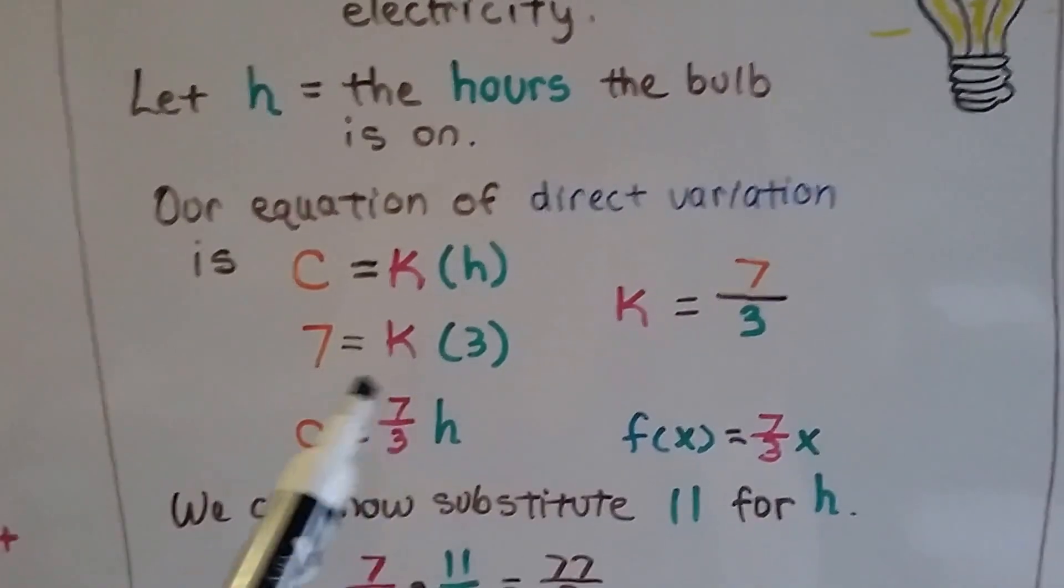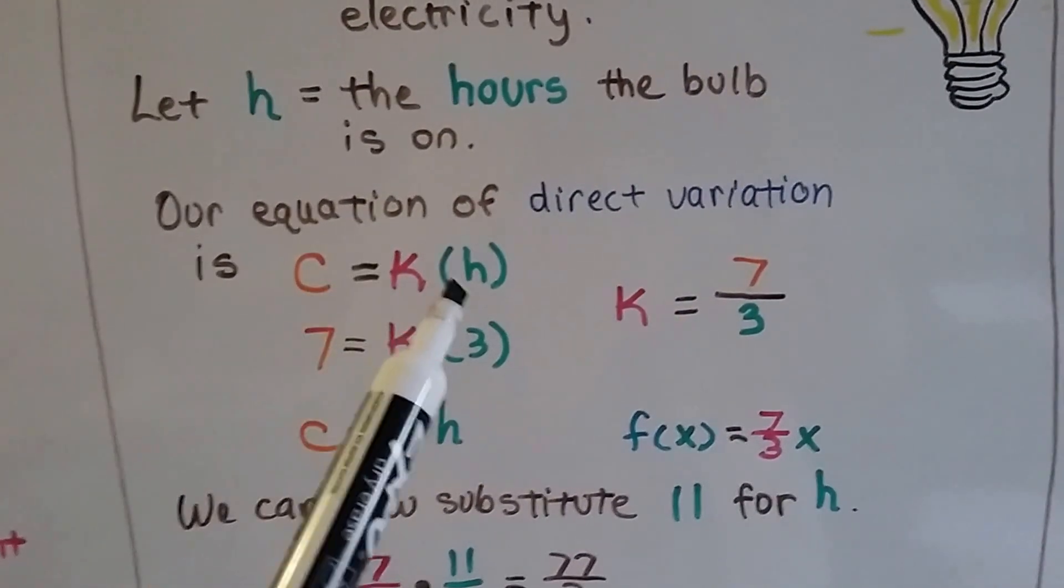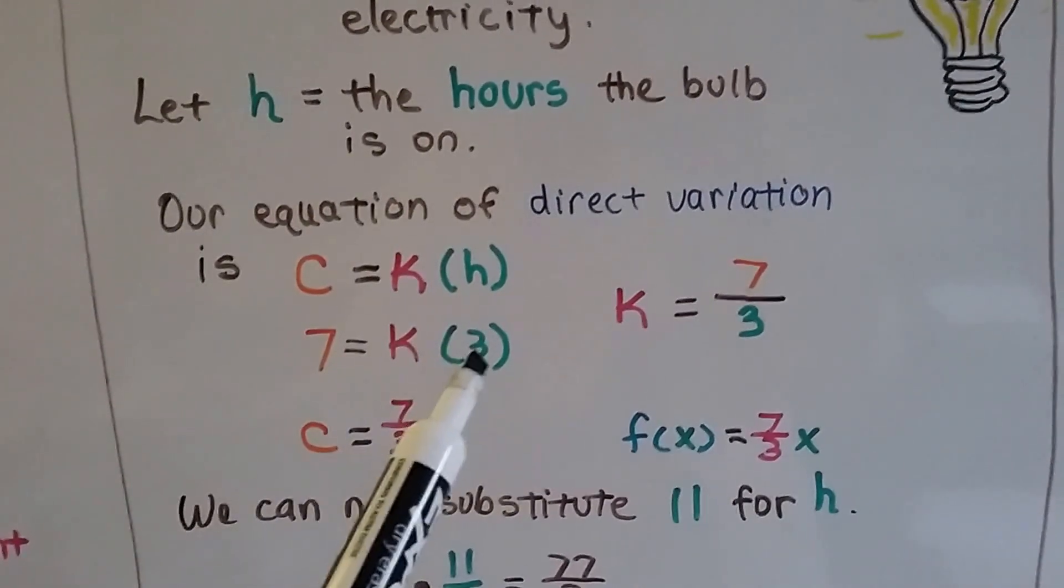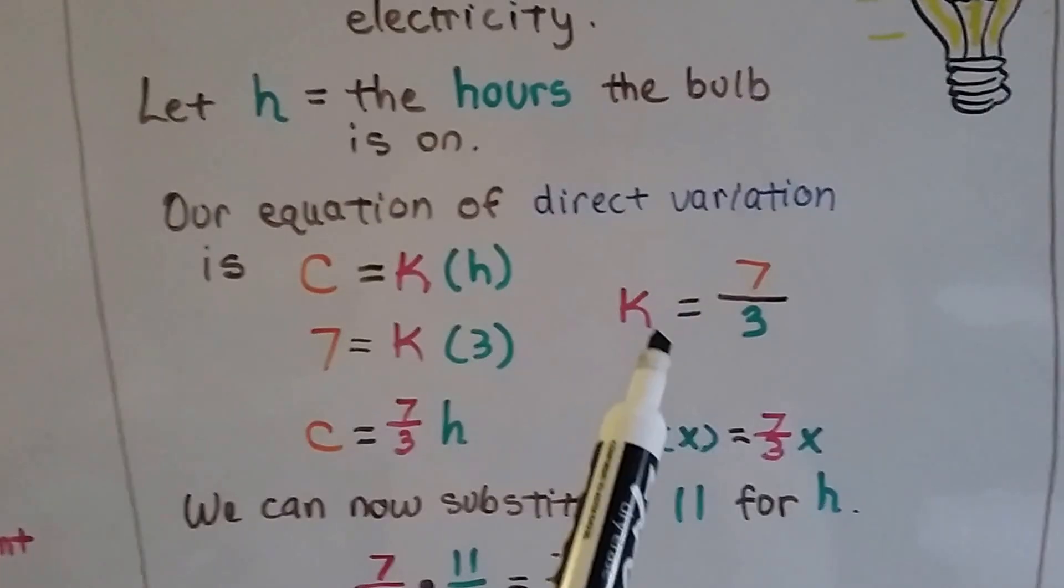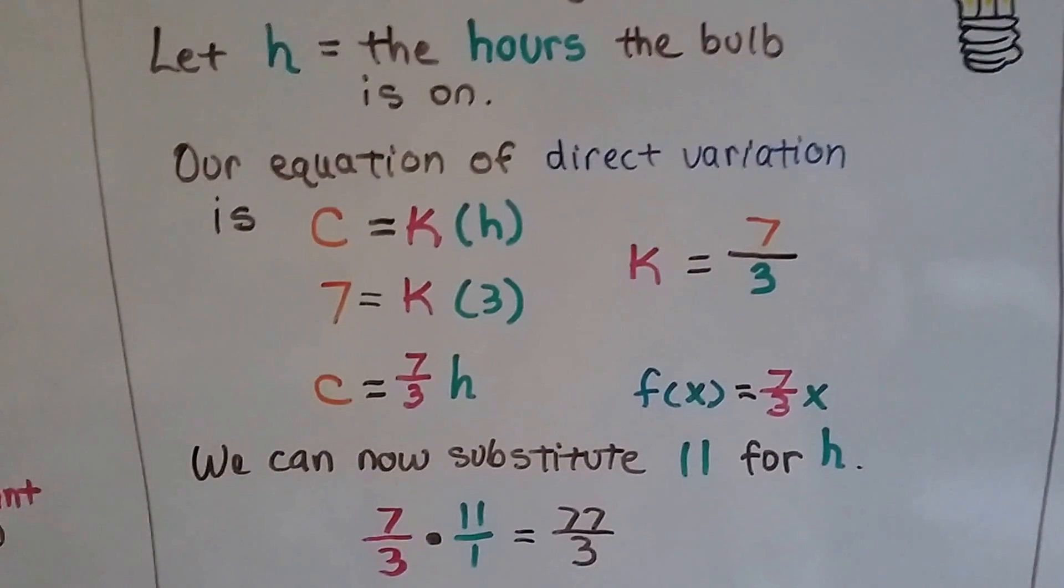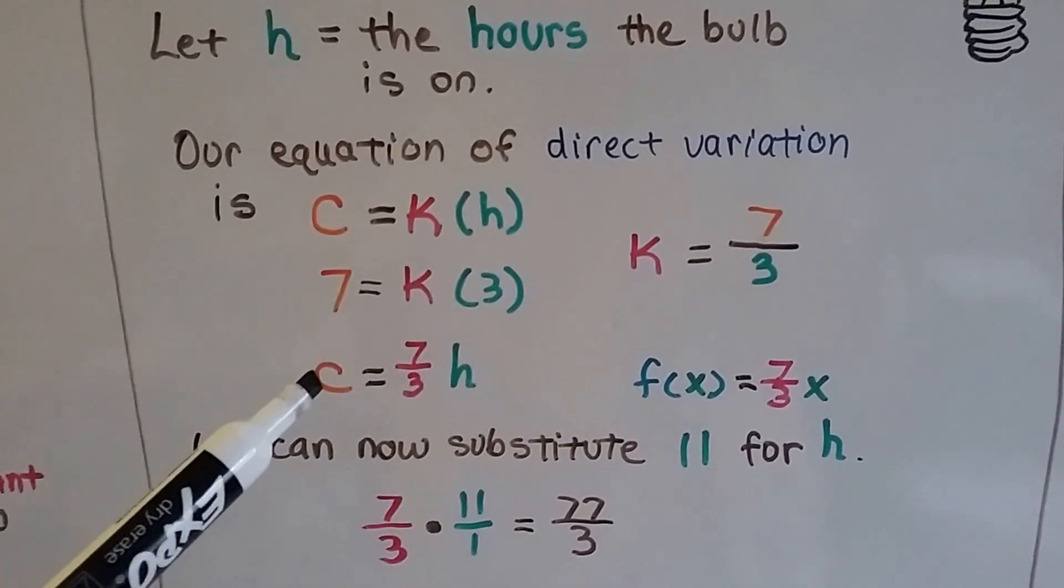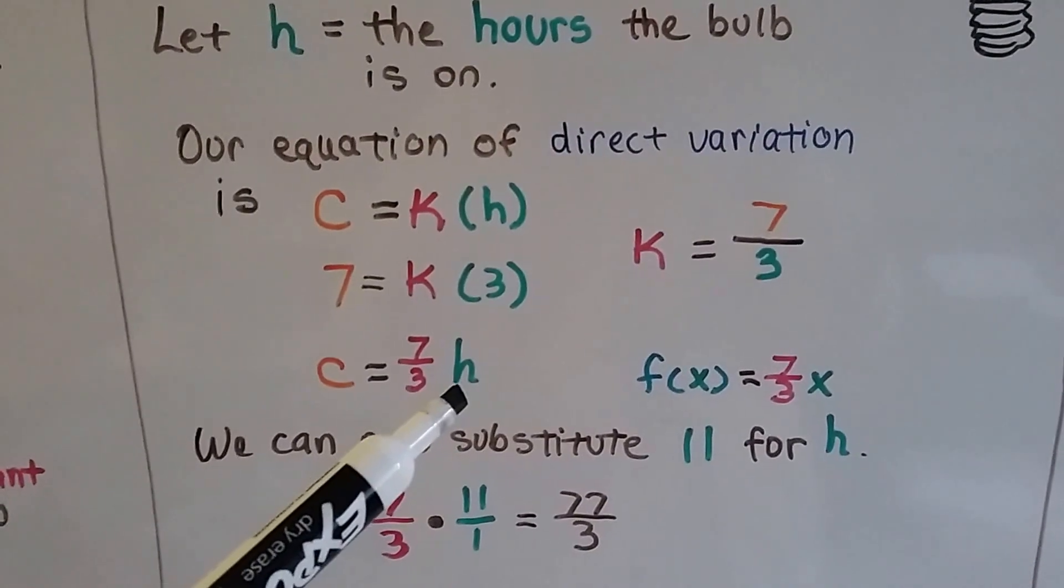We can solve this by putting the y value, the C value, 7, on top of this x value, which is now an H. We put k equals 7 over 3. We end up with the cost of the light bulb being on is 7 thirds hours.